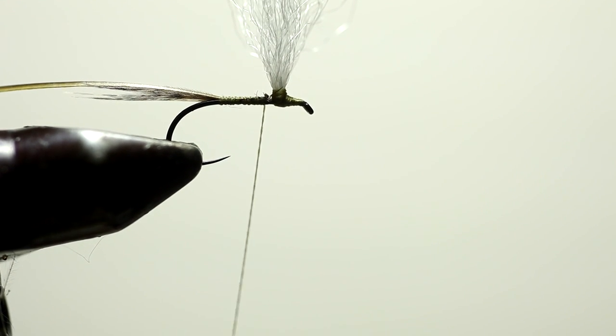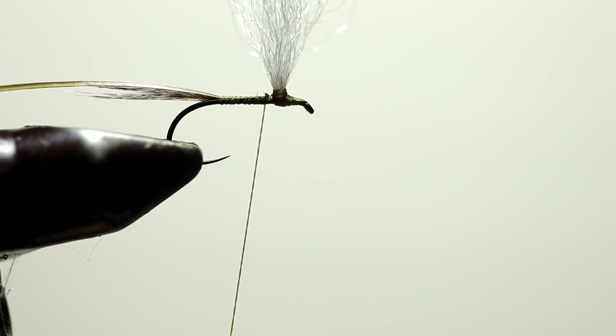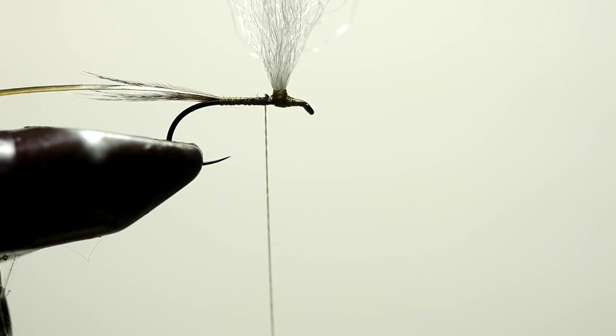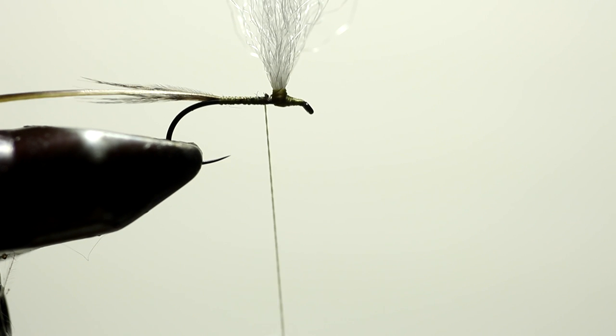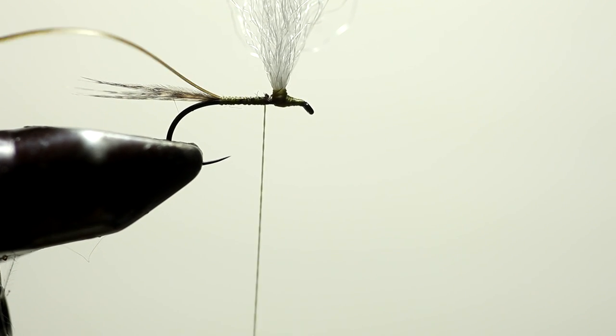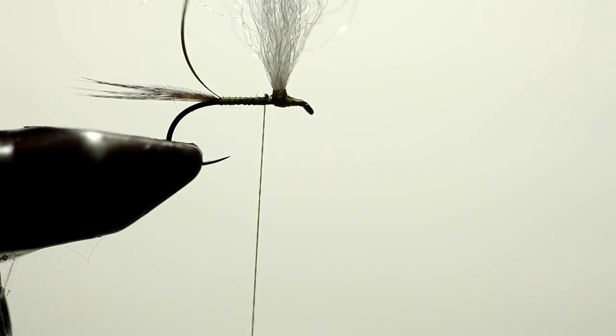So now we're ready for the next material. And that's going to be my hackle pliers, because we have to make the body of this fly. And what you're going to see is the body of this fly is going to be extremely slender, just like the naturals would be.